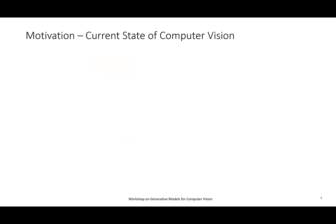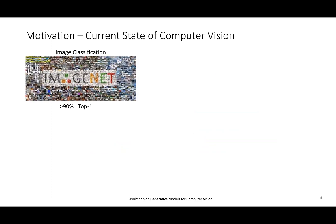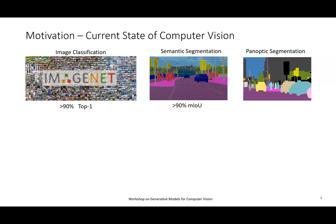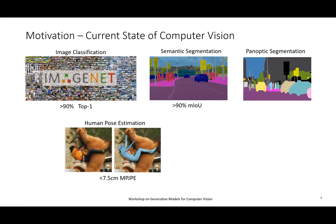Let me briefly tell you about the motivation for this workshop. What we've seen over the last decade or so is a big advance in computer vision performance. We have ImageNet performance at 90-plus percent, segmentation performance 90-plus, panoptic segmentation in very high detail, and 3D estimation from 2D images at superhuman level — down to about four centimeters in absolute 3D error.